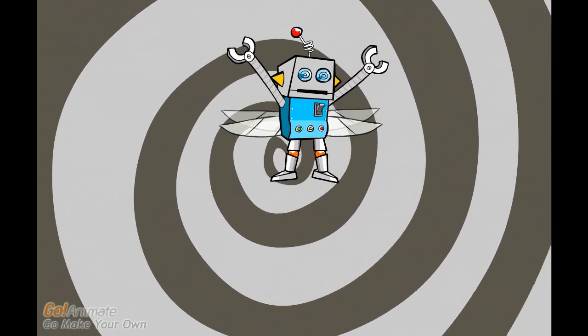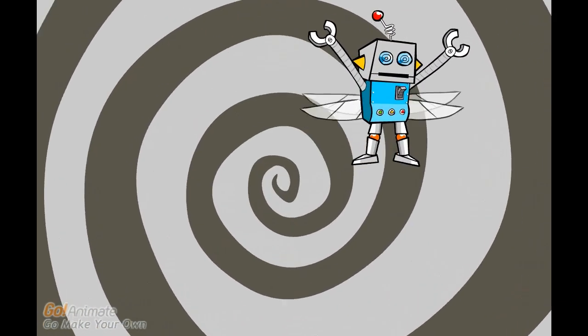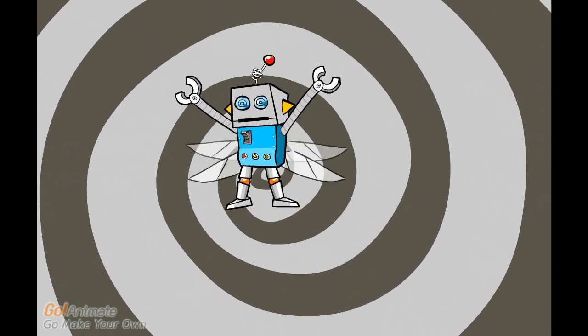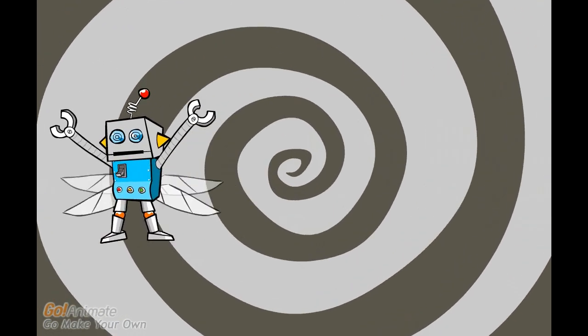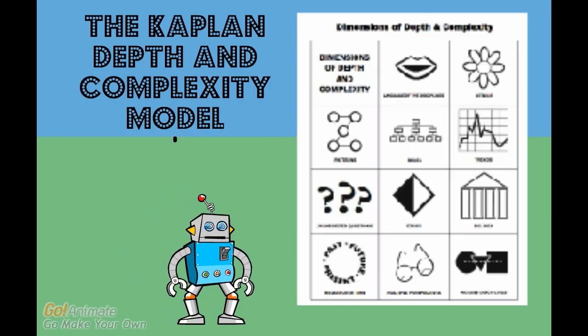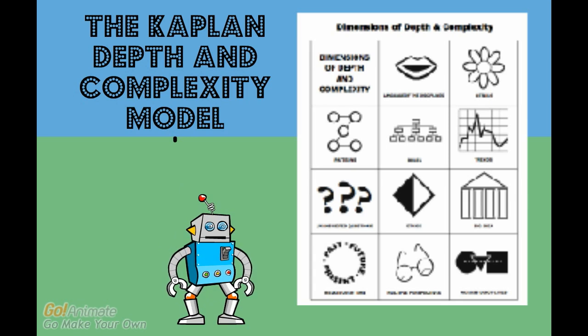I bet you didn't know I could fly. Here we go. The Kaplan model is made of 11 pictures. Each one will help us go deeper into our topic.